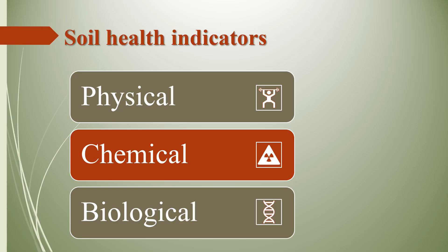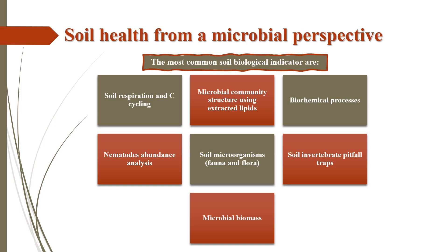There are many soil physical, chemical, and biological parameters that indicate soil health, such as pH, water holding capacity, soil available nutrients, soil organic carbon, bulk density, and soil microbial biomass carbon. When we compare physical and chemical indicators to biological indicators, biological indicators show a quick reaction to natural and human change, making them a responsive technique for evaluating soil health. As identified by one research, biological indicators number 183, and the most common include soil respiration and carbon cycling, microbial community structure, biochemical processes, and nematode abundance analysis.